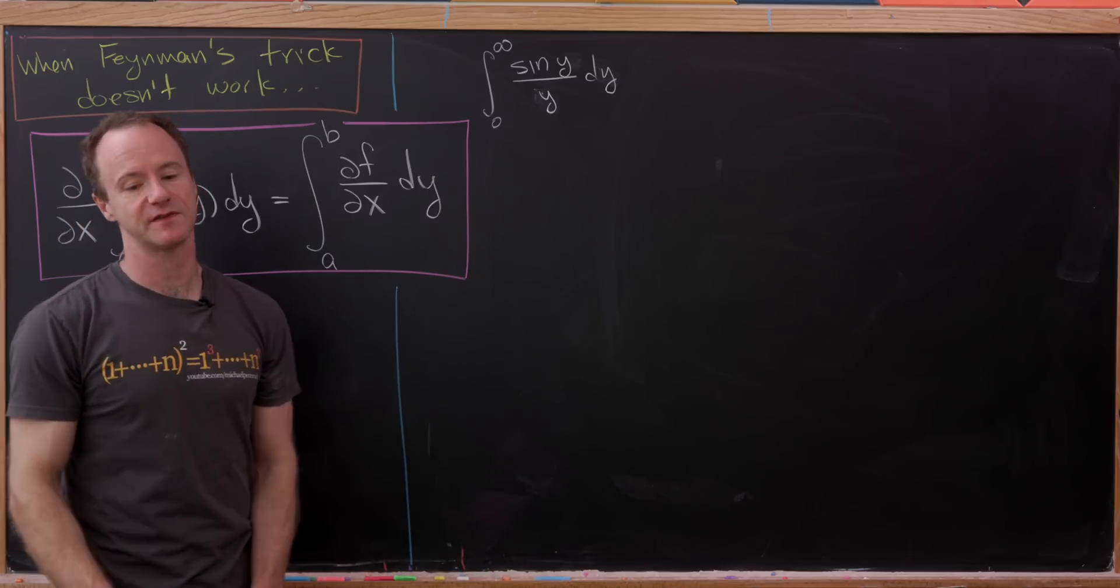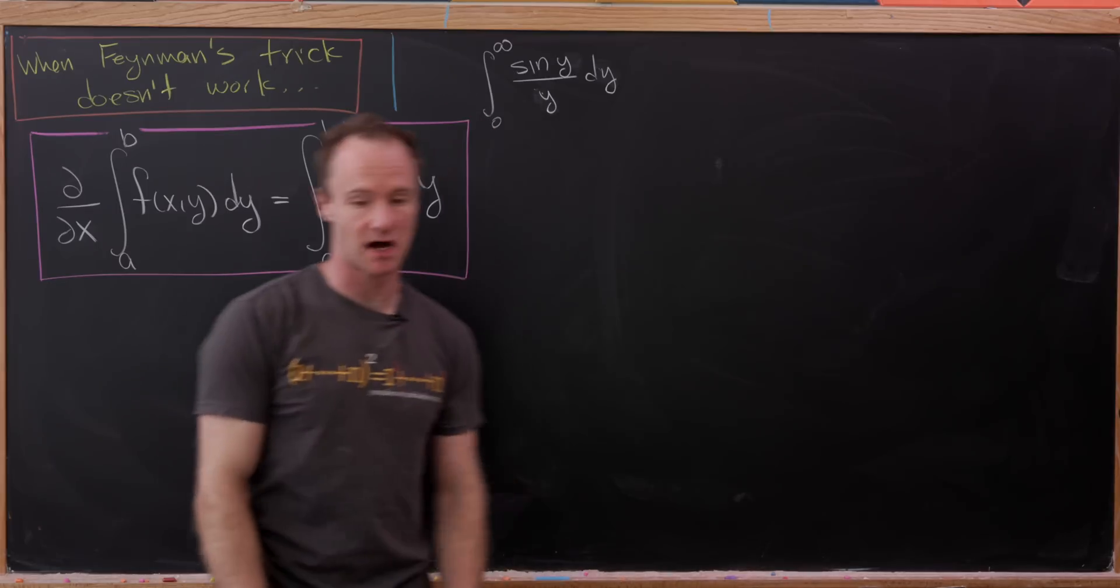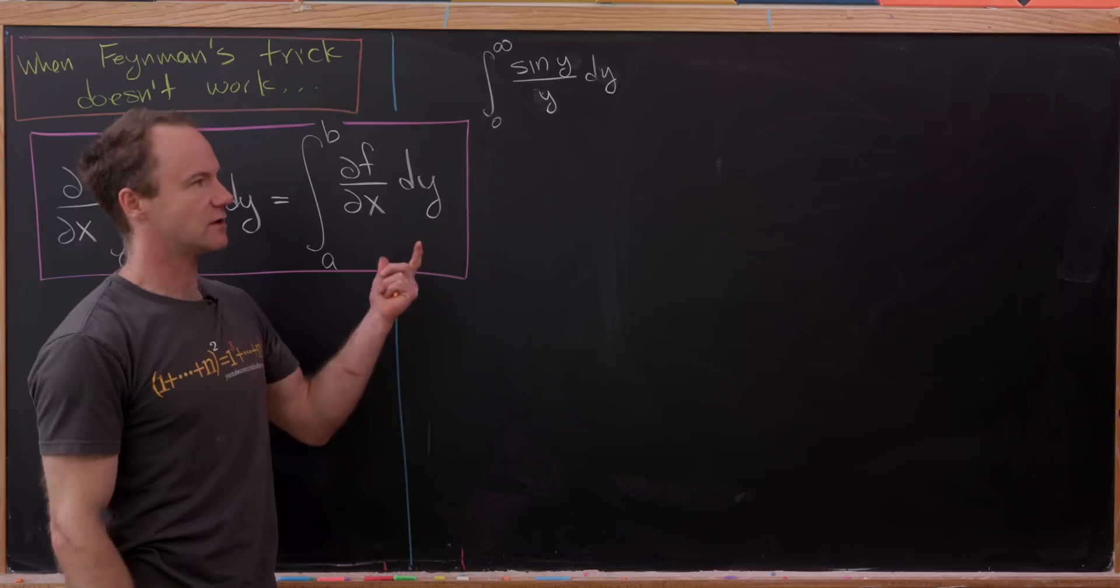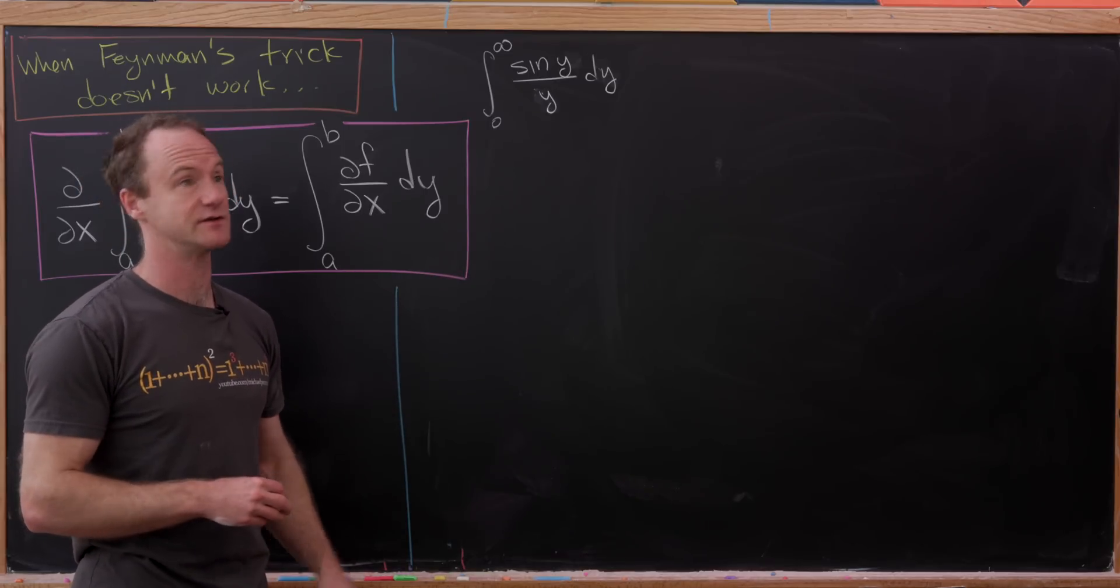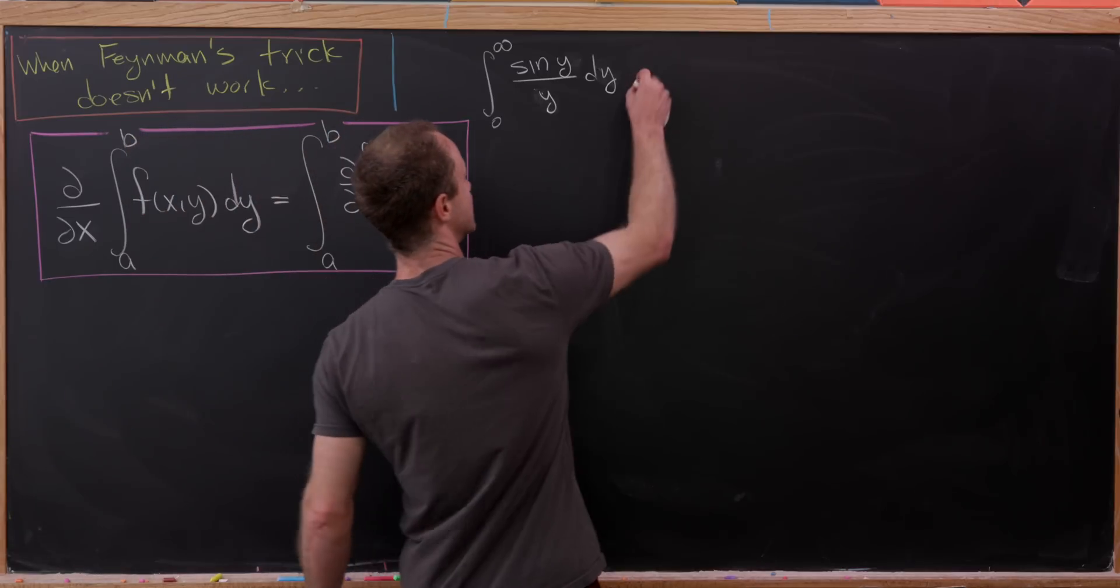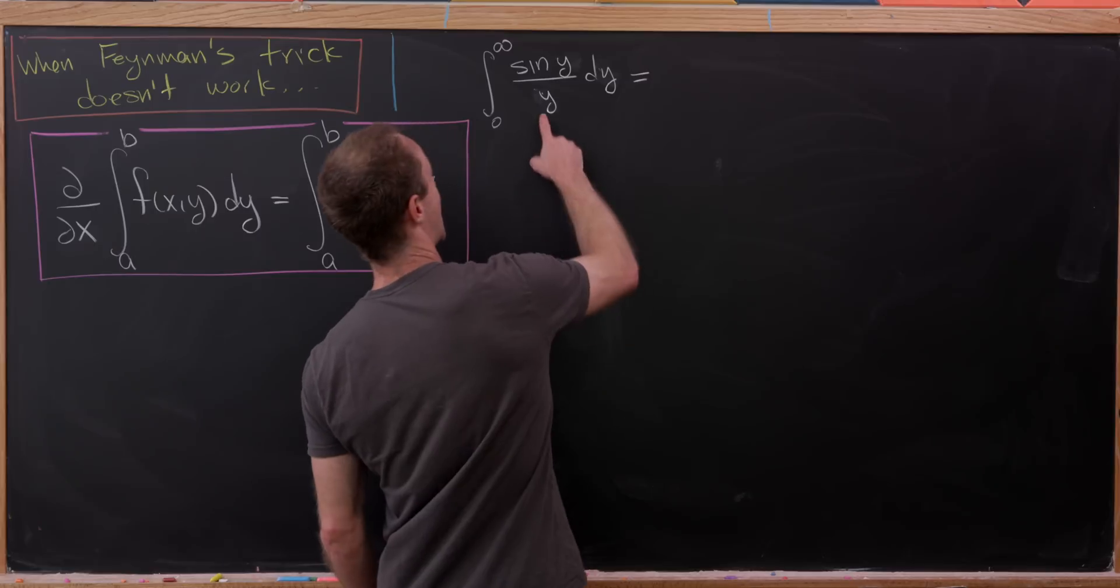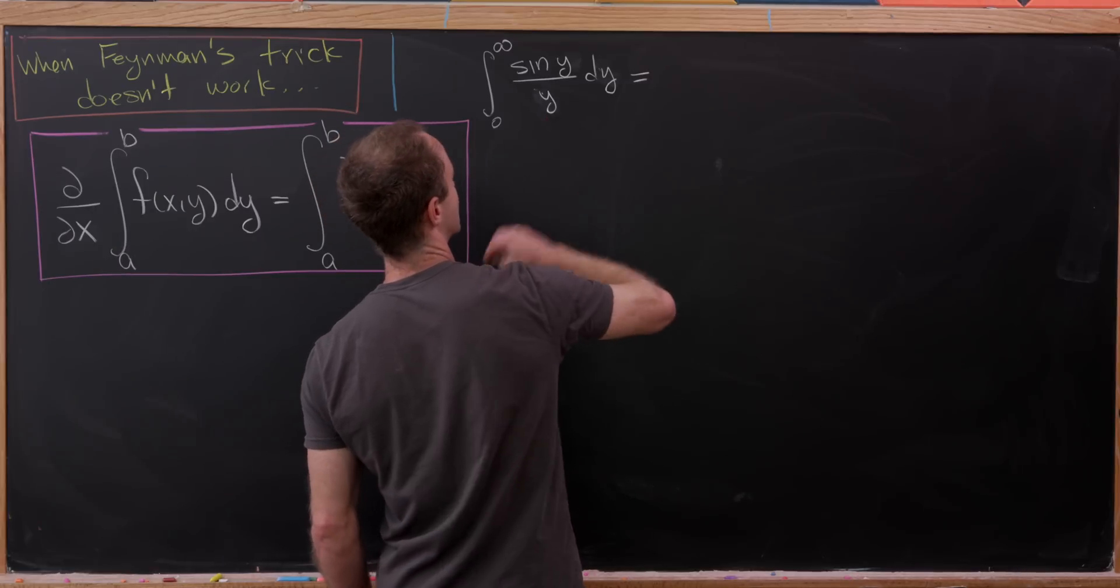The real purpose of this video is to look at an example when this trick does not work. So like I said, we're just going to do a sketch of this. What we'd like to do is write this as a function of x, y, where we've evaluated at a certain obvious value of x.